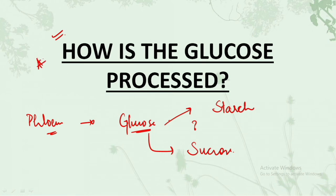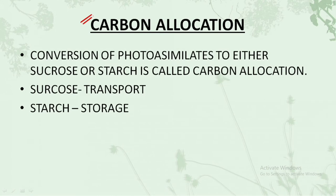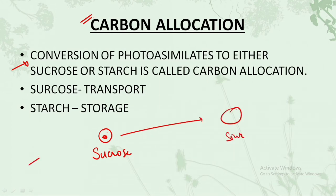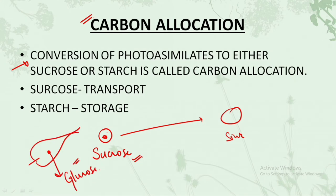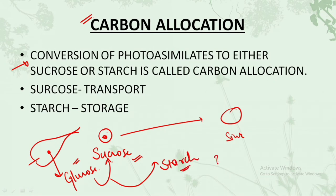This topic is from the plant physiology unit and it is very important because many questions have been asked from it. I'll be coming up with a previous year question series in detail very soon, so wait for those videos. Now let's understand the theory. The conversion of photo-assimilates to either sucrose or starch is called carbon allocation. Sucrose gets transported from the source area to the sink area.